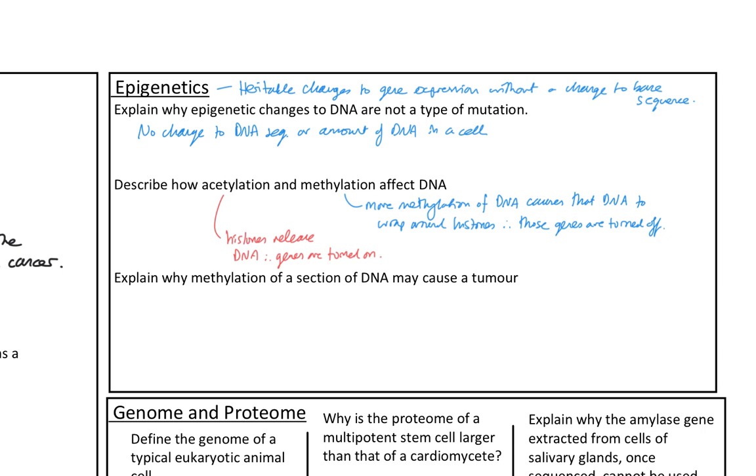And then explain why methylation of a section of DNA may cause a tumour. So it's like well what gene do I might I turn off that's going to cause a tumour. So if that section of DNA, I'm in blue because I'm on the, I'm not the one on there. If it contains a tumour suppressor gene. Therefore cell division may speed up. Assuming no other functional tumour suppressor gene. Therefore you get a mass of cells. It equals a tumour.